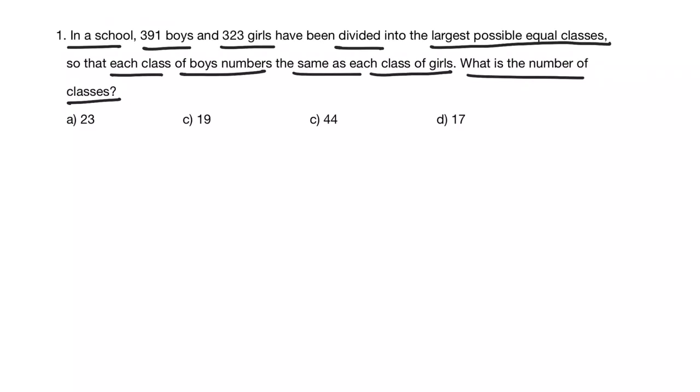This question is based on HCF concept from number system. Here boys and girls are divided, that means they are the factors. Largest possible equal classes means highest. And then each class of boys numbers the same as girls, that means this factor which is highest should be common in boys and girls. That means it is HCF, highest common factor. So the number of classes is HCF of 391 boys and 323 girls.